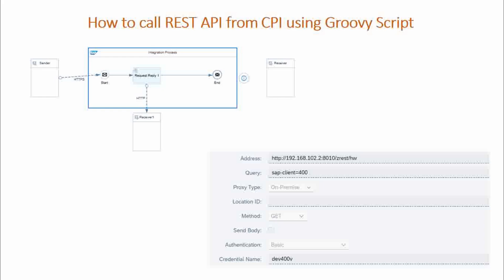We will see today how we can call a REST API from CPI using a Groovy script. In the previous video I explained the same topic — how we are going to call the REST API from CPI using a request reply palette, not by the Groovy script. That request reply palette will pass through a cloud connector.